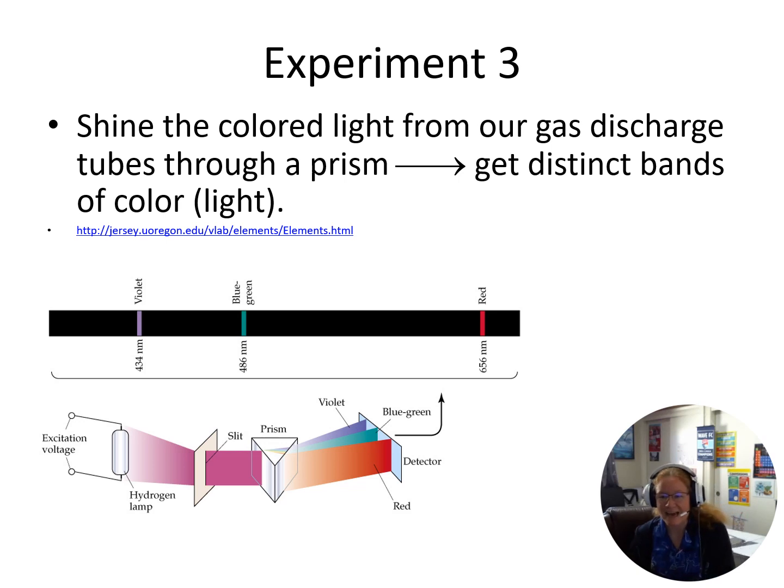Well, what I get is I get these distinct bands of color. So if I take a cathode ray tube with an element and I shine it through there, I'm going to get distinct bands of color. And every single element, as we find out, has its own unique spectra.